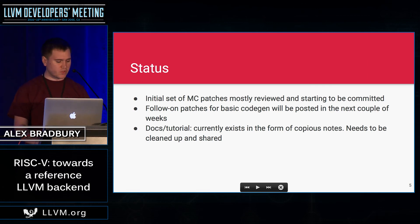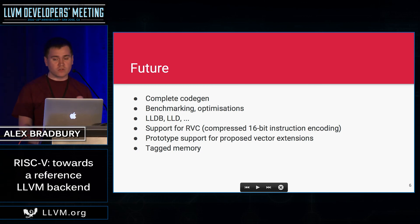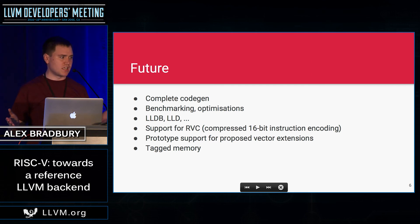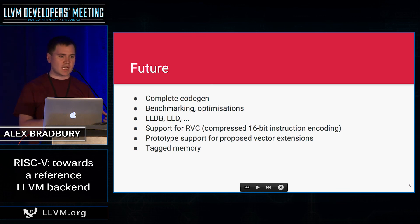I have copious notes in terms of the documentation tutorial that I hope to achieve — those need to be cleaned up a little bit and shared. In the future we can of course work on completing code gen and other LLVM tools. RISC-V also has a compressed instruction set for better code size optimization, so 16-bit encoding. I think that's something really interesting, as well as looking at the proposals for RISC-V vector extensions — here we have an opportunity with an open ISA and a feedback loop where we can implement it, look at how well various proposals work, and then feed back to people who are trying to specify that architecture.